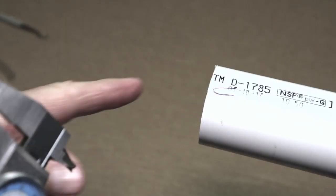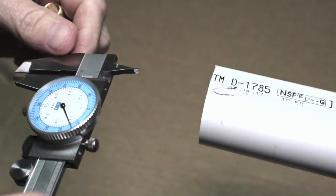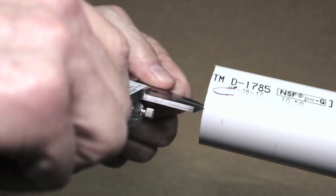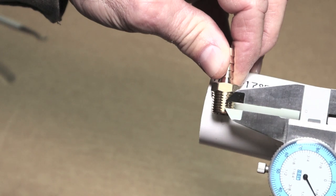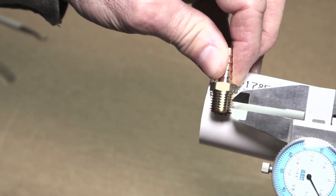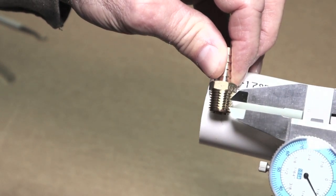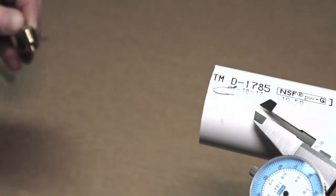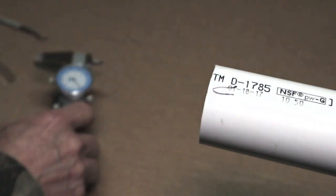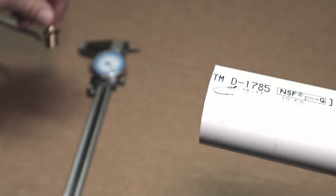This is Schedule 40 inch and a half PVC. This will give you some kind of an idea of how many threads are going to be engaged in the PVC pipe. Three threads is all we're going to engage. The PVC pipe is tough stuff. Three will be plenty.